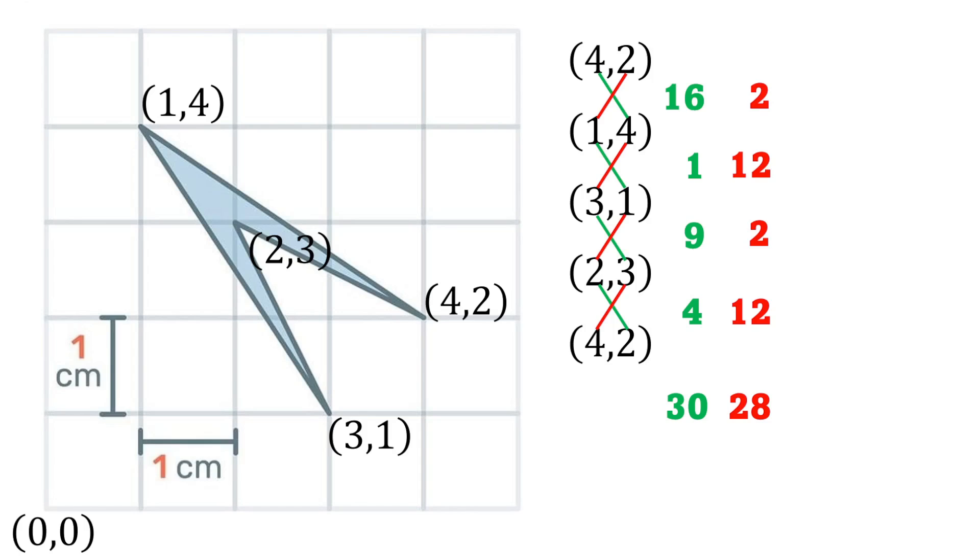And then I'm going to subtract those and find half of that difference. And that will give me the area. So 30 minus 28 is 2. Half of 2 is 1. So the area of that shape which resembles the Star Trek emblem is simply 1 square centimeter. Did you get it right?